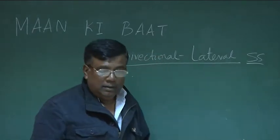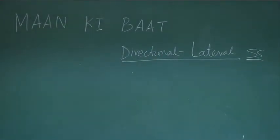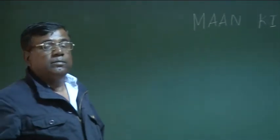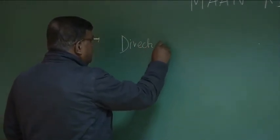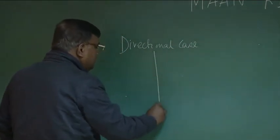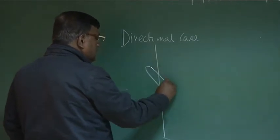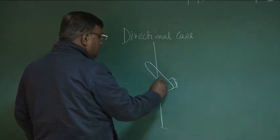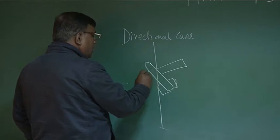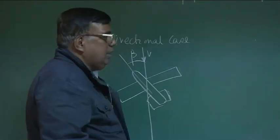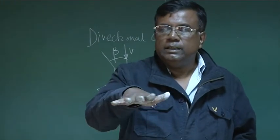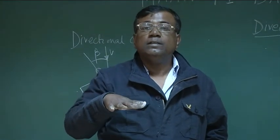You know that we have seen what is meant by static stability. If there is an initial tendency to come back to equilibrium once disturbed, then you say it possesses static stability. For the directional case, if I am flying the aircraft like this, this is the relative wind V, and this is beta. We are revising the directional case — if I am flying like this, then beta is 0. Beta means sideslip angle.